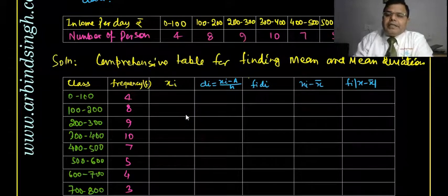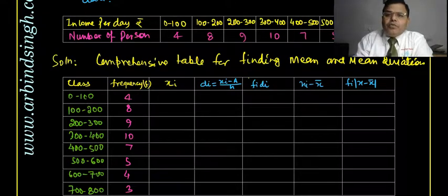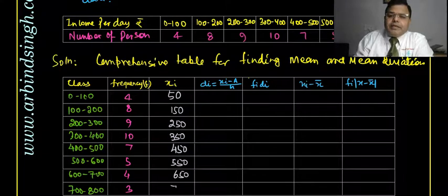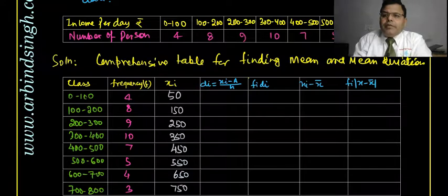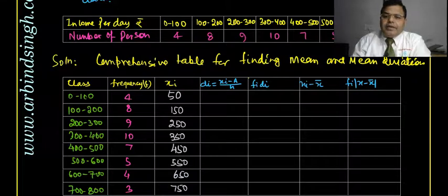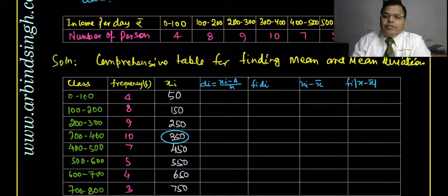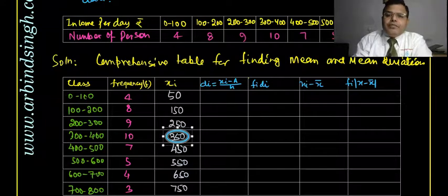The class mark xi = (upper limit + lower limit) / 2. So: 50, 150, 250, 350, 450, 550, 650, 750. There are eight classes, so we take the middle one as the assumed mean. The fourth or fifth class with higher frequency is chosen — here a = 350 is taken as the assumed mean.